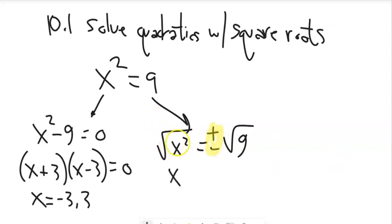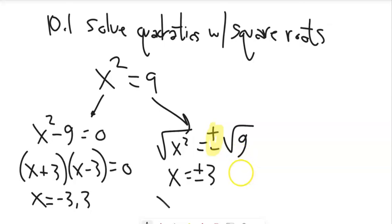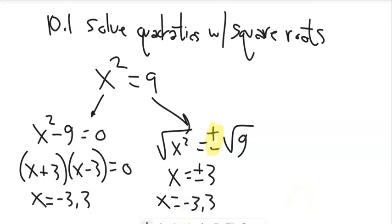The square root of x is x, really the absolute value of x. But since we brought in the plus or minus, we're good. Plus or minus square root of 9 is 3. So that's literally plus or minus — we have a plus case or a minus case, so x is negative 3 or 3.